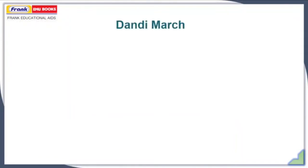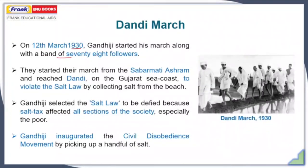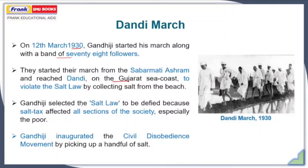The Civil Disobedience Movement started with the Dandi March, which was started by Gandhiji on 12 March 1930. He began this march along with a band of 78 followers. They started their march from Sabarmati Ashram, Ahmedabad, and reached Dandi on the Gujarat sea coast in April to violate the salt law by collecting salt from the beach. Gandhiji selected the salt law to be defied because the salt tax affected all sections of society and all households of India, especially the poor. Gandhiji inaugurated the Civil Disobedience Movement by picking up a handful of salt and disobeying the salt law of British colonialism.